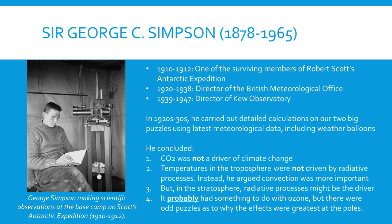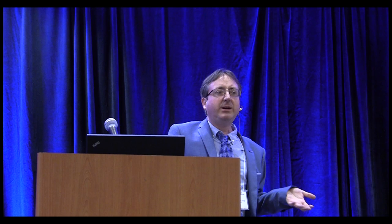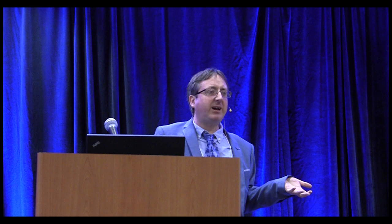Most of this work was done without computers or with very early computers. A philosophy that seems to have been popular was the 'pick one thing' approach. Gilbert Plass explicitly stated in one of his papers that he was going to try to explain every possible climate change in terms of CO2, reasoning that presumably somebody else would look at other factors. However, it seems nobody else took him up on that offer, and a lot of the theories about CO2 as the driver trace back to Plass.